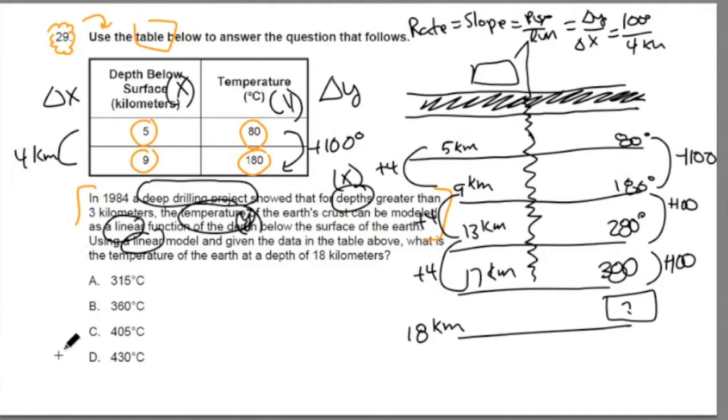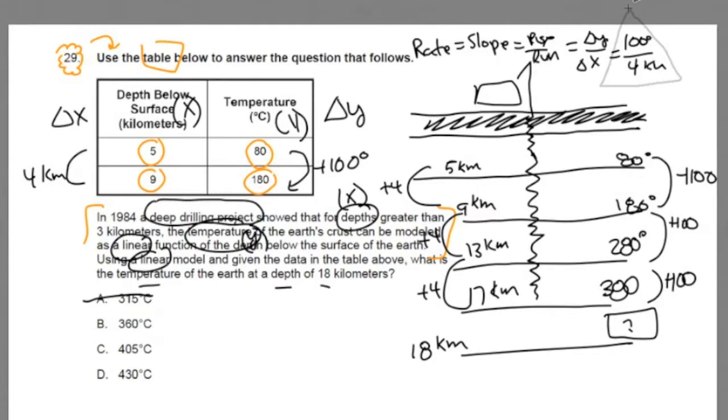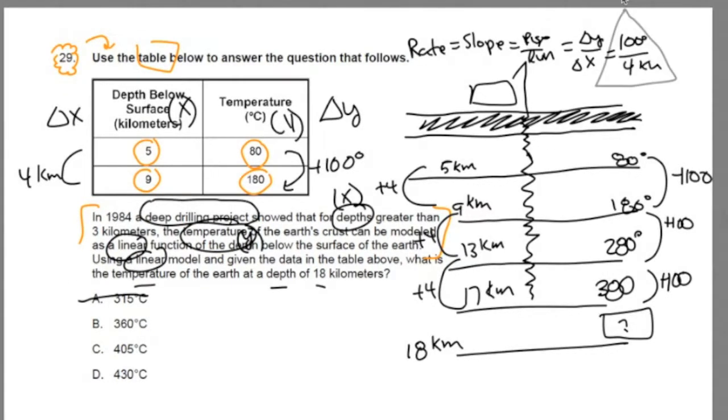So if we look at our answer choices here, we're trying to find the temperature at a depth of 18 kilometers. We know that at 17 kilometers, it's 380. So we cross out A. Now all these are... It's kind of hard to visualize which one of these would be. So we've got to go this last kilometer. How do we do that? Well, we go back to our rate. See this rate here? Up 100 degrees for every 4 kilometers.